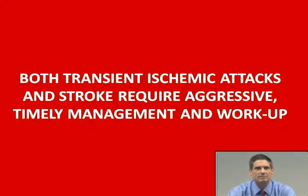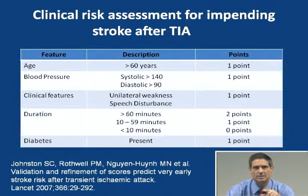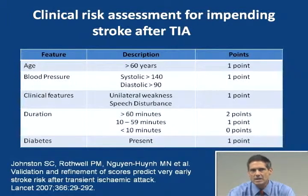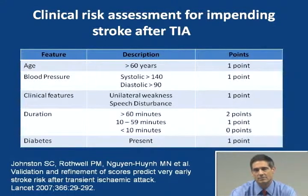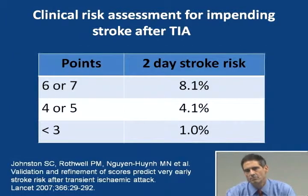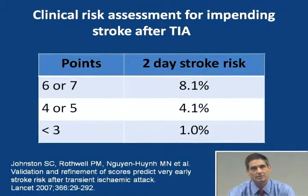TIAs require urgent workup and management, either in the hospital or closely monitored outpatient. Using a scoring system similar to the Wells criteria, patients can be given points for age, blood pressure, clinical features, duration of symptoms, and diabetes — with higher points for more significant symptoms. A score less than three versus greater than six produces an eightfold difference in stroke likelihood. Even with all bad risk factors, two-day stroke risk is still significant, making it necessary to facilitate the workup, especially with higher scores.